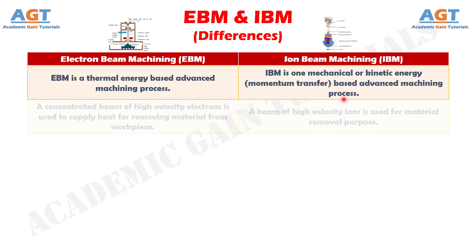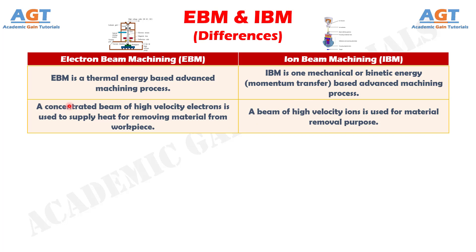Number 2. In Electron Beam Machining, a concentrated beam of high-velocity electrons is used to supply heat for removing material from the workpiece, whereas in Iron Beam Machining, a beam of high-velocity ions is used for material removal purpose.